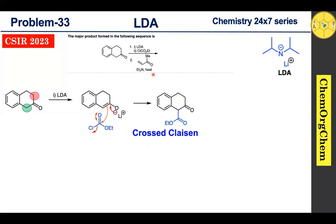After generating the beta-keto ester, the second step involves the use of methyl vinyl ketone in the presence of triethylamine. For convenience, we can redraw the structure. This substrate has two acidic sites, but when compared, this site is more acidic.